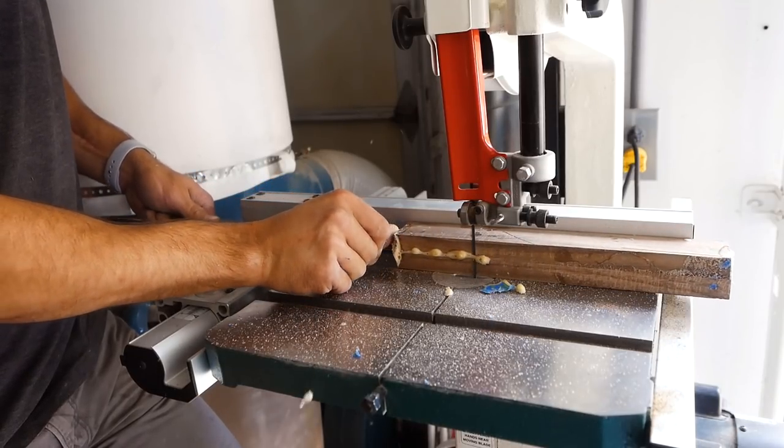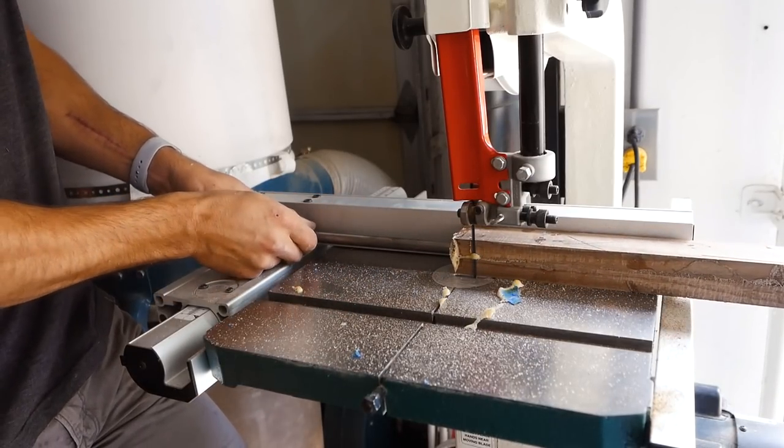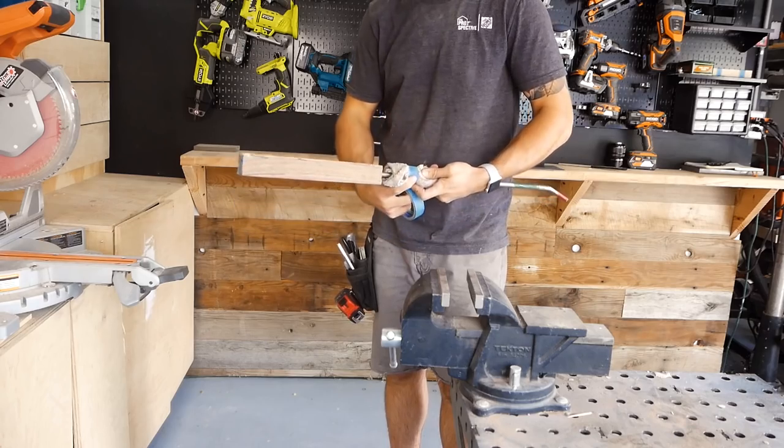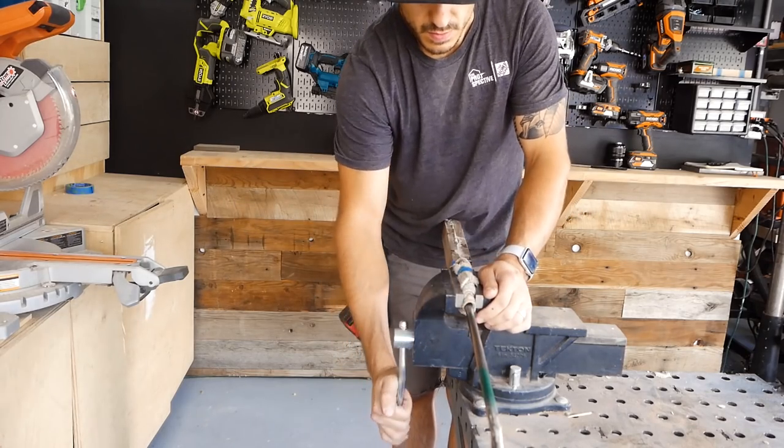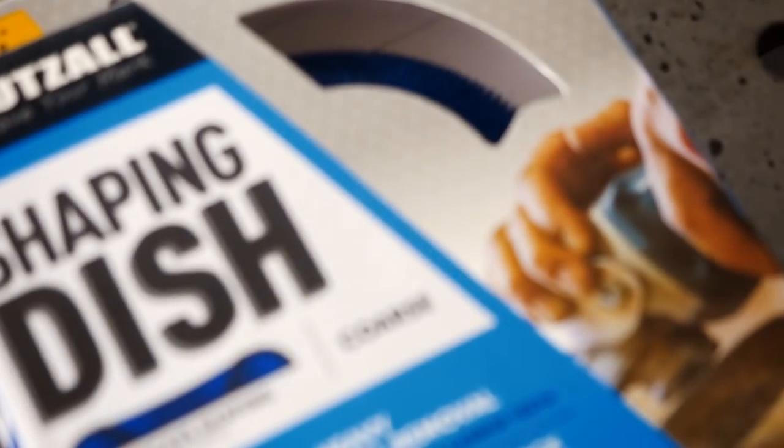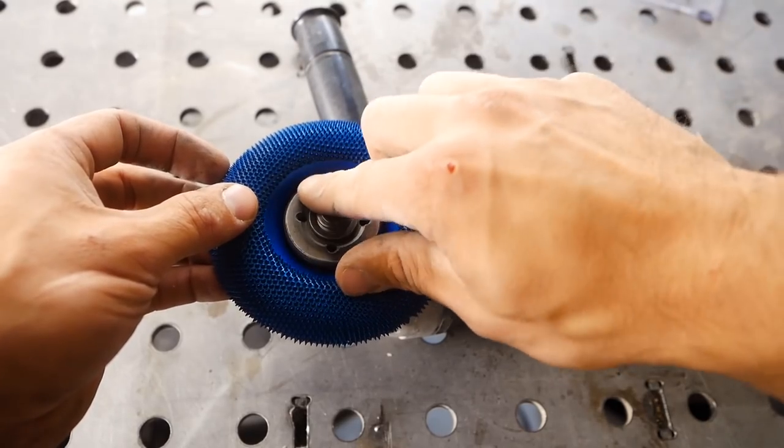Getting ready to start carving out our hand grips, I'm using shaping discs from Kutzall. Essentially, they're abrasive wheels that go on your angle grinder to allow for you to cut and move the wood very fast, very efficiently, in a very, very fun way.